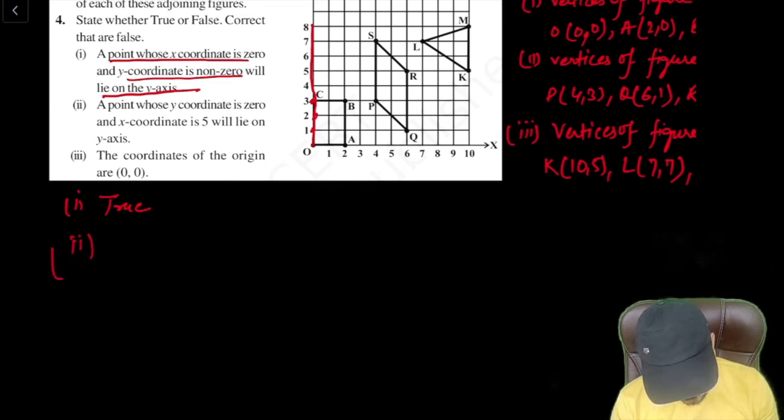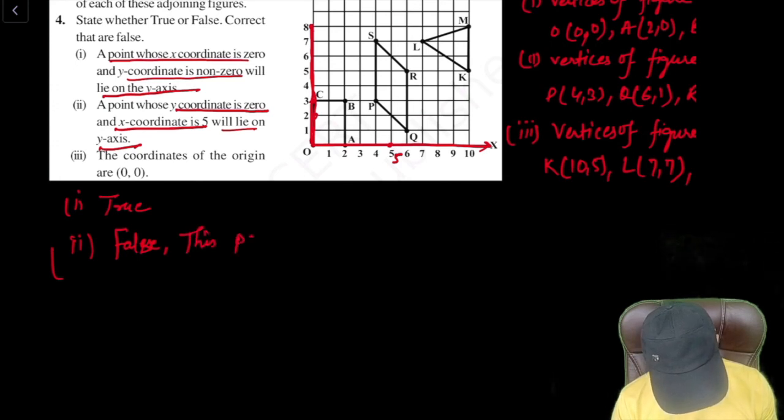Now let's talk about the second point. A point where Y coordinate is zero and X coordinate is five will lie on Y axis. Now let's say X axis is five and Y axis is zero will lie on X axis only. It will not go to the Y axis. So it is false. What is the correct statement? This point will lie on X axis.